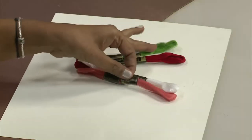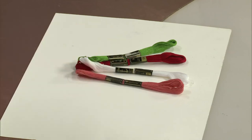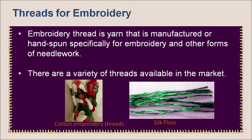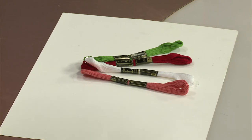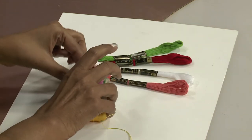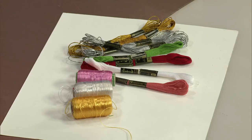Another important material required for embroidery is the embroidery thread. The texture of the embroidery depends upon the kind of thread used. Embroidery thread is yarn that is manufactured or hand-spun specifically for embroidery and other forms of needlework. There are a variety of threads available in the market. As you can see, we have cotton embroidery threads, silk floss, silk threads and metallic threads. Use the type of thread or weight that looks best or has the effect you want to achieve in your embroidery.